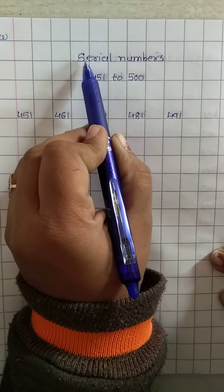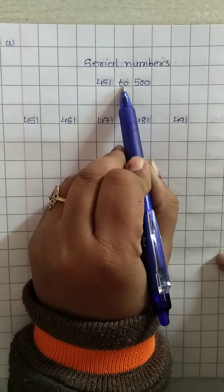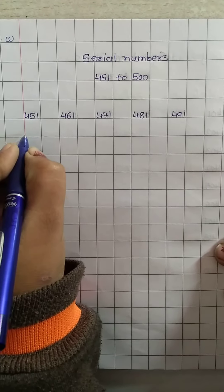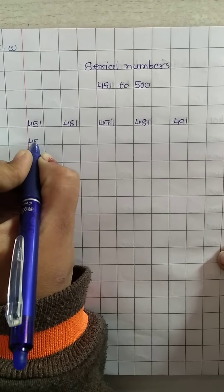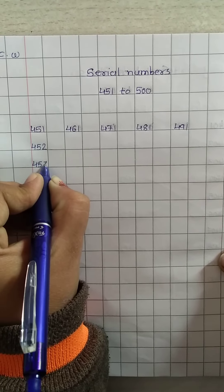Now we have to learn serial numbers 451 to 500. Now here, 451, then after 452, then 453.